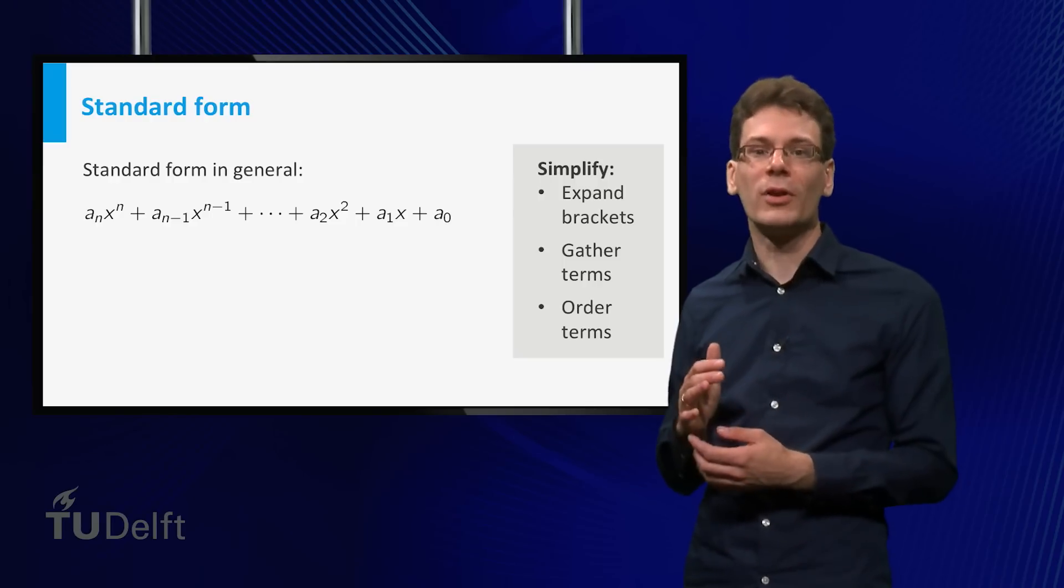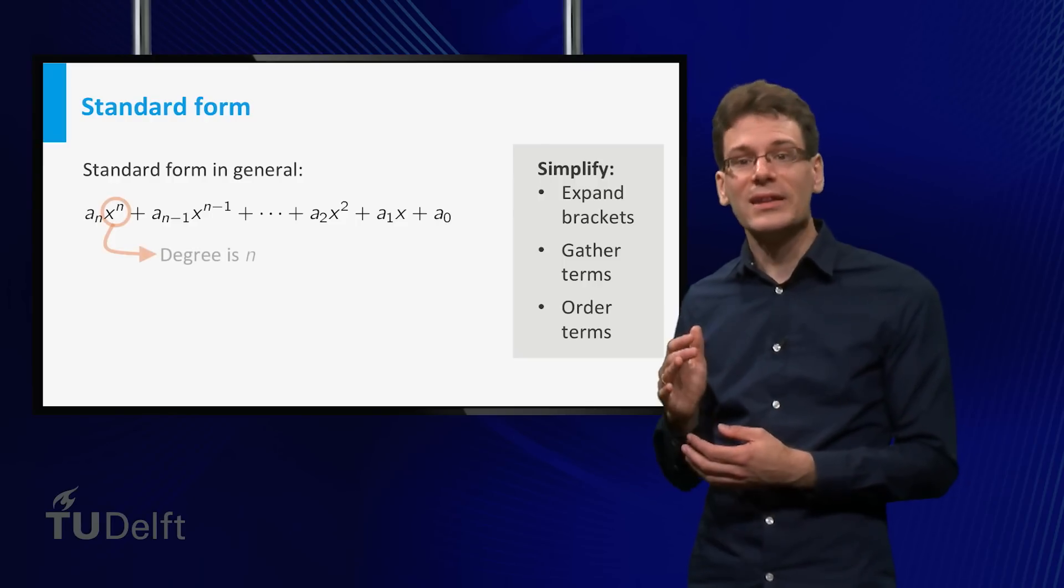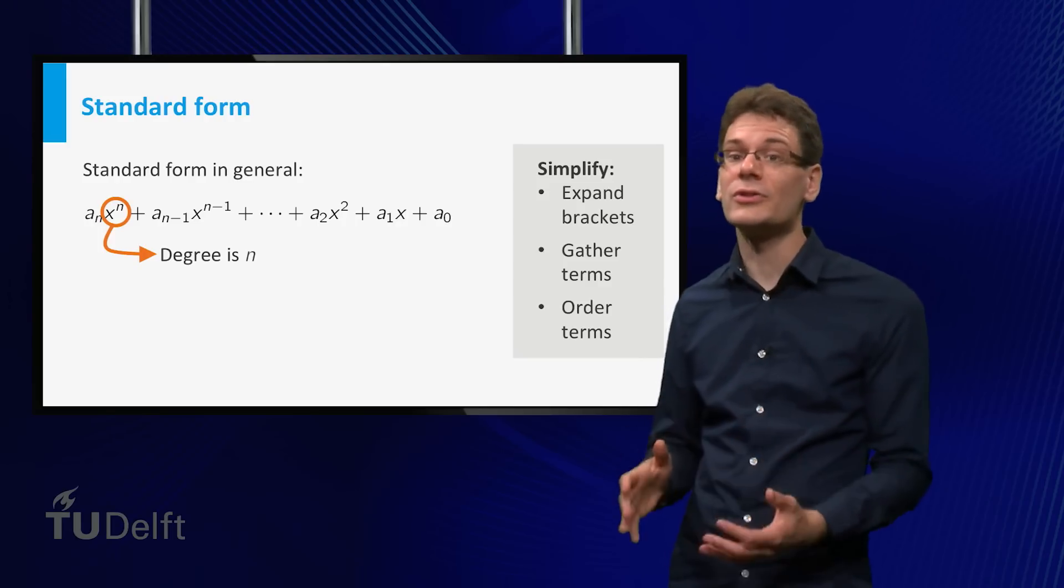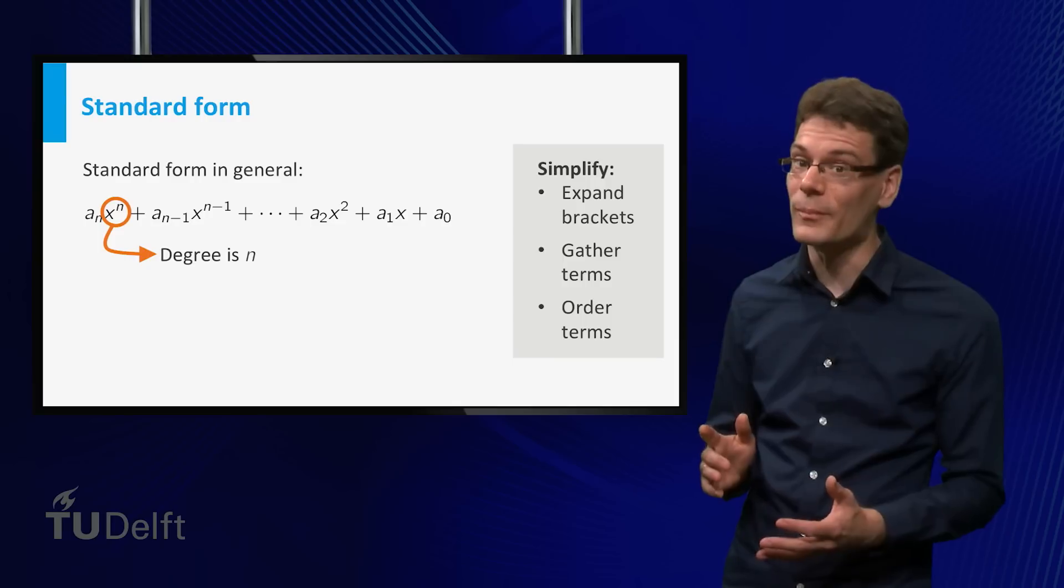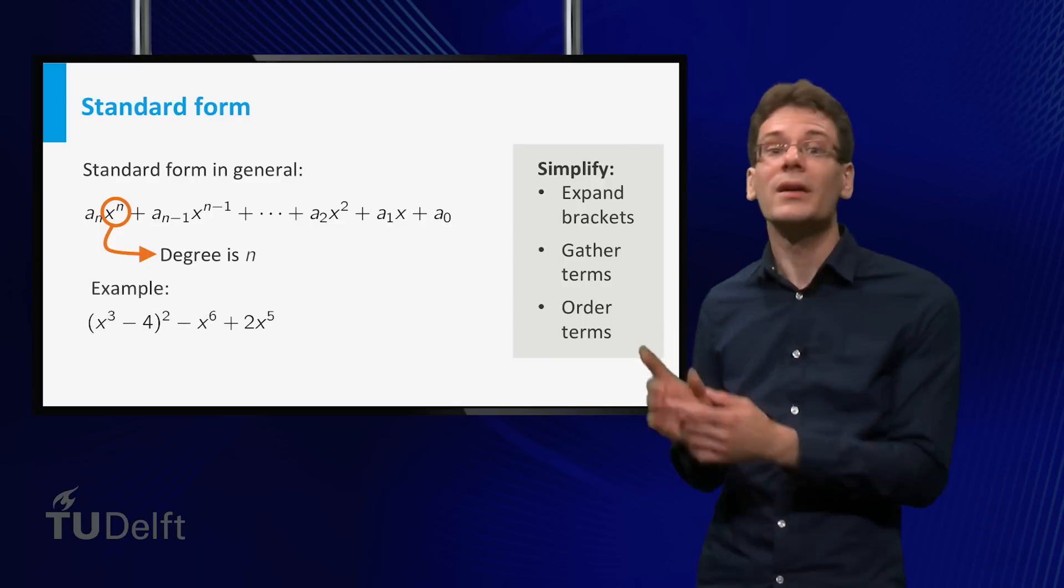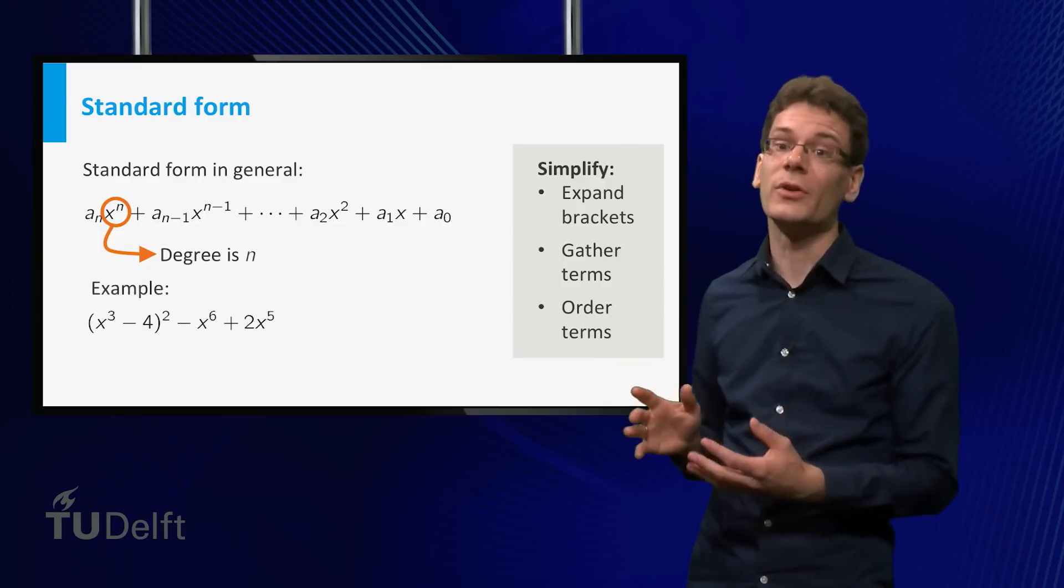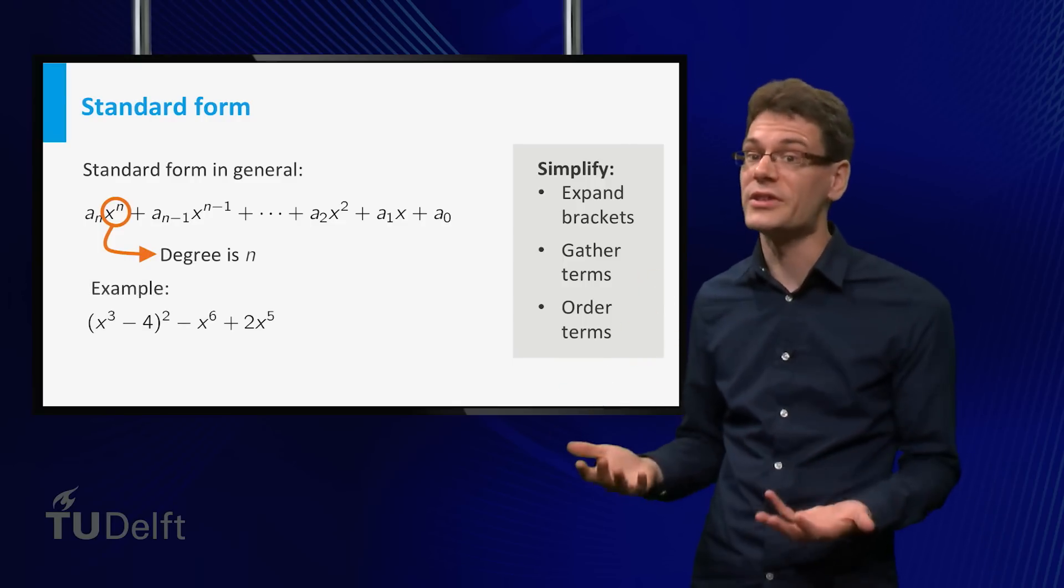An important property of a polynomial is its degree. It is defined as the highest power that occurs in the standard form. Be aware, you have to look at the standard form. For example, the expression on the screen is a polynomial that is not in standard form. What is its degree?